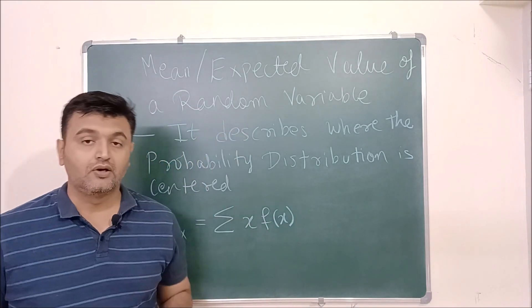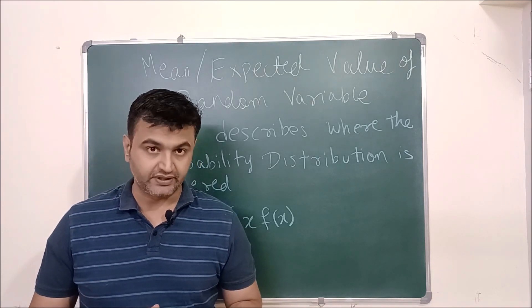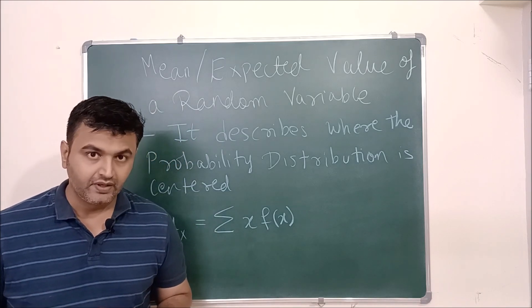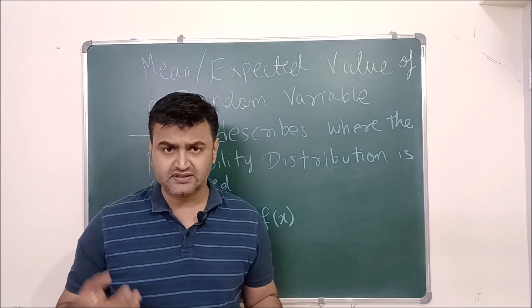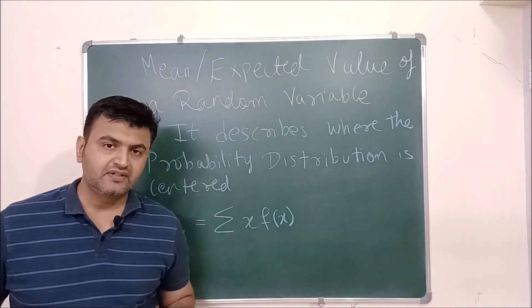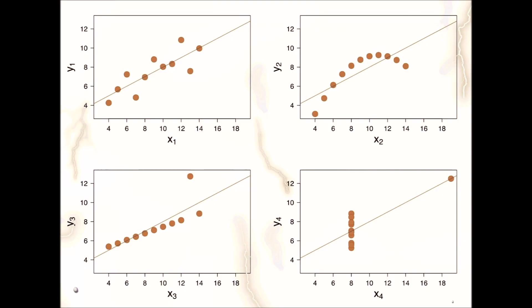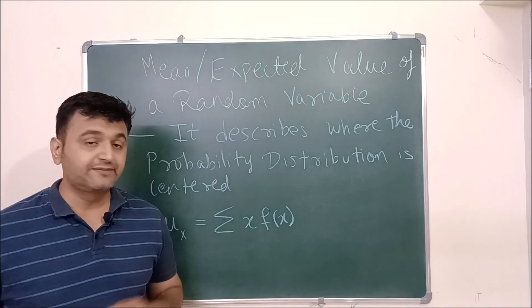Today we are going to talk about mean or expected value of a random variable. It is one of the very important statistical measures one needs to study when working with data. Other statistical measures include median, mode, variation, standard deviation, and z-score. Mean itself is not sufficient — looking at this figure, there are four datasets distributed very differently, yet each has the same mean. So only knowing the mean doesn't fully help us, which is why we study other statistical measures as well.